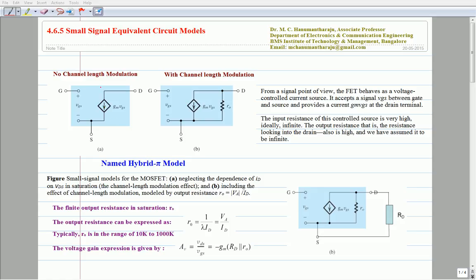The drawback of this model is the model assumes that the drain current flowing in between drain and source of the MOSFET is independent of the drain source voltage.